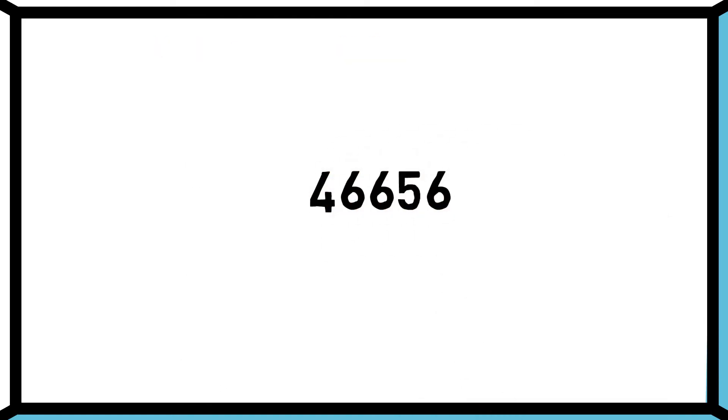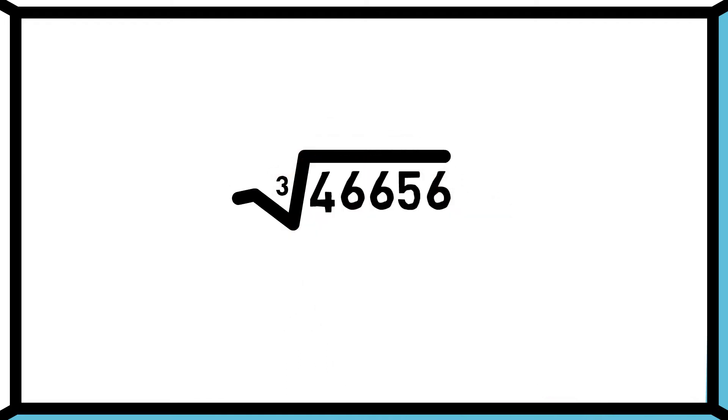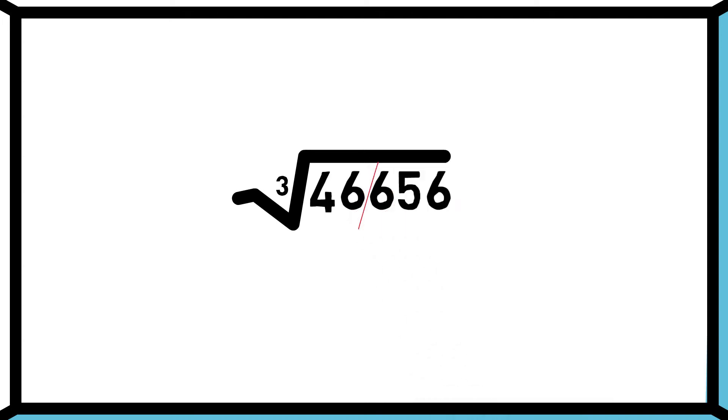Let's take one example to find the cube root of 46,656. Always separate last 3 digits from the starting digits. To find the last digit of the answer, we will see the last digit of the question. Here, the last digit of the question is 6.